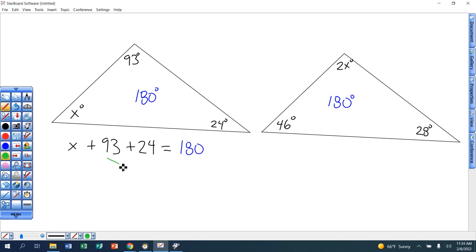So to solve this for x, all I've got to do is combine those like terms right there, and then subtract that away from 180, and that will tell me what that x has to be to add that up to get 180. So 93 plus 24 equals 117.